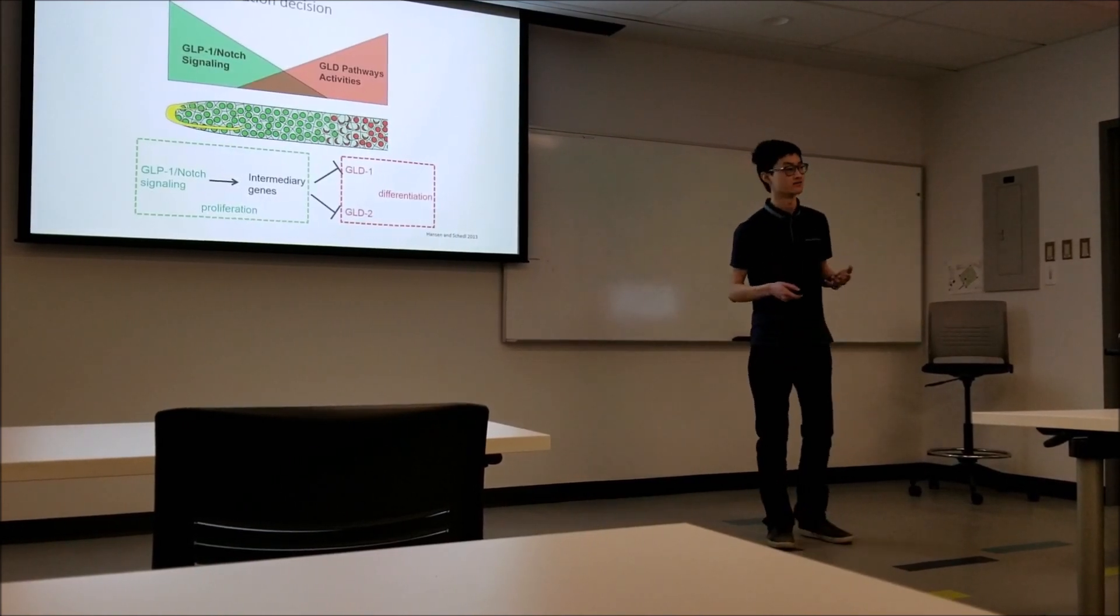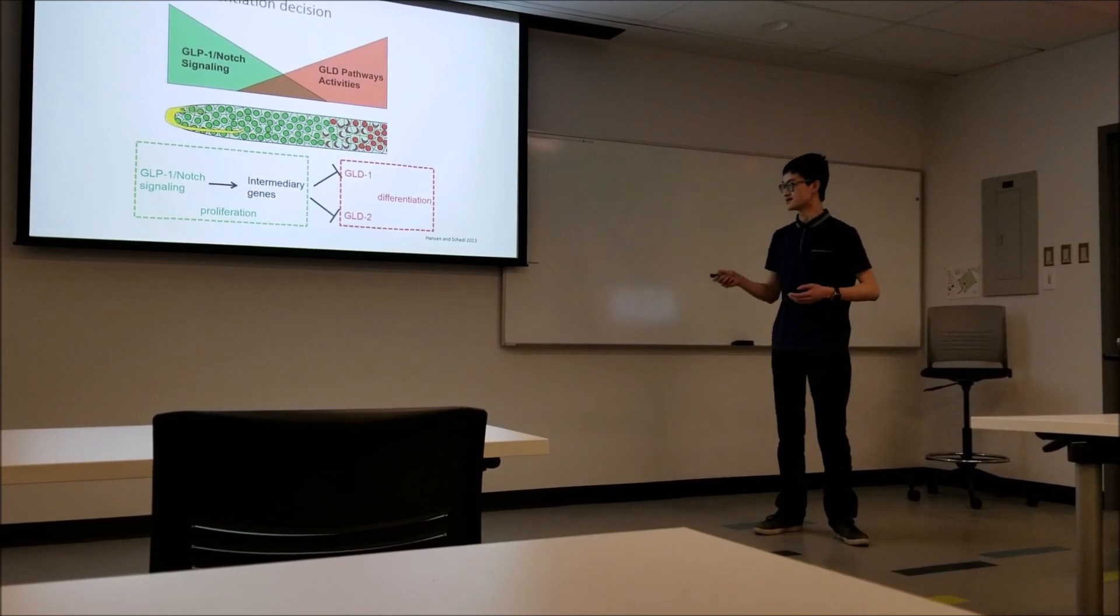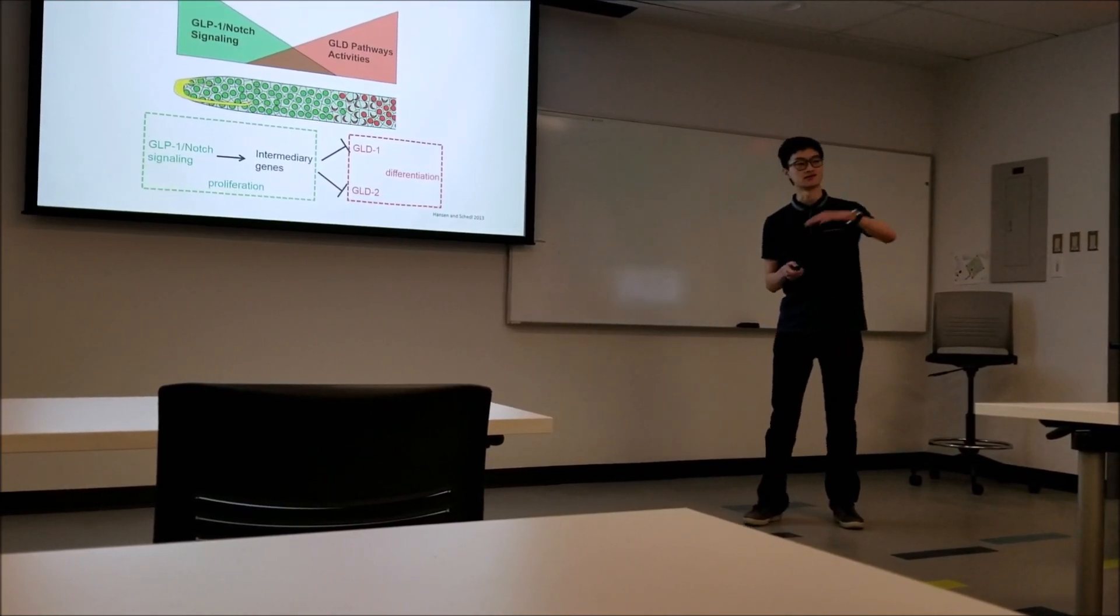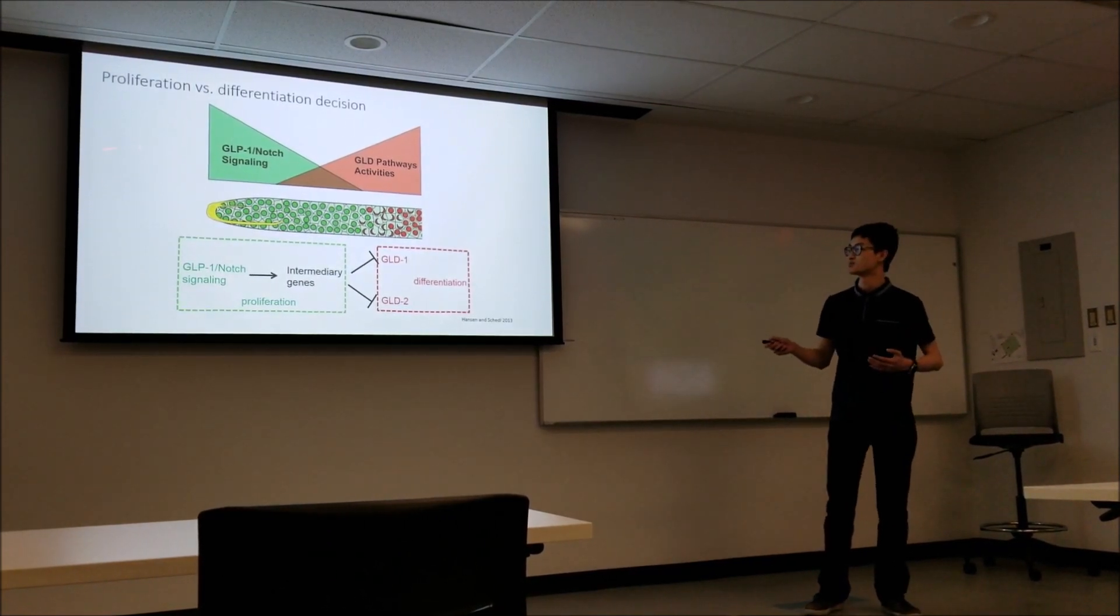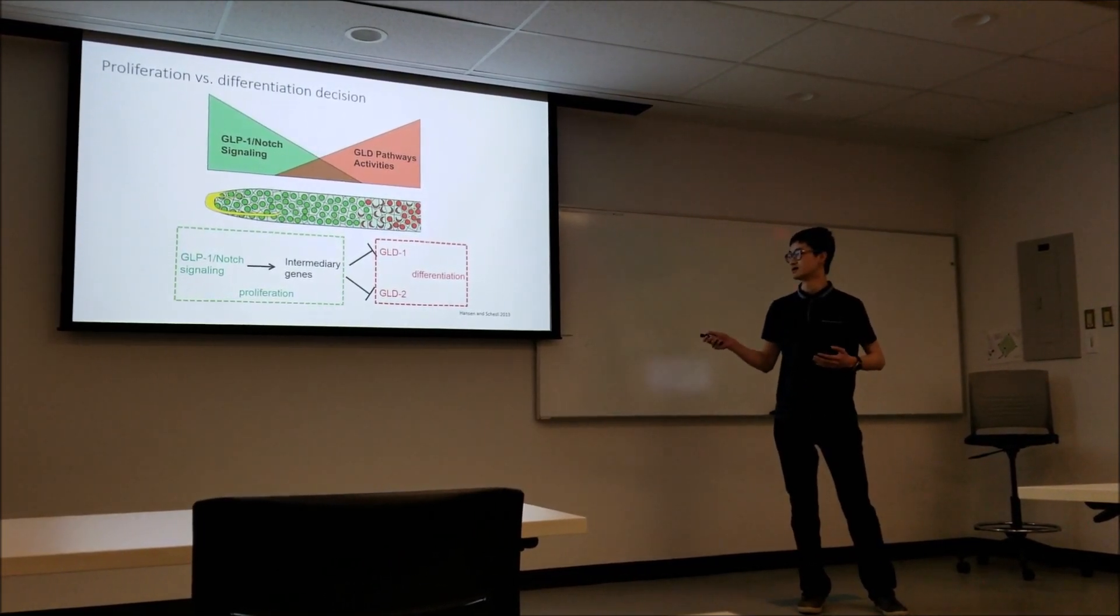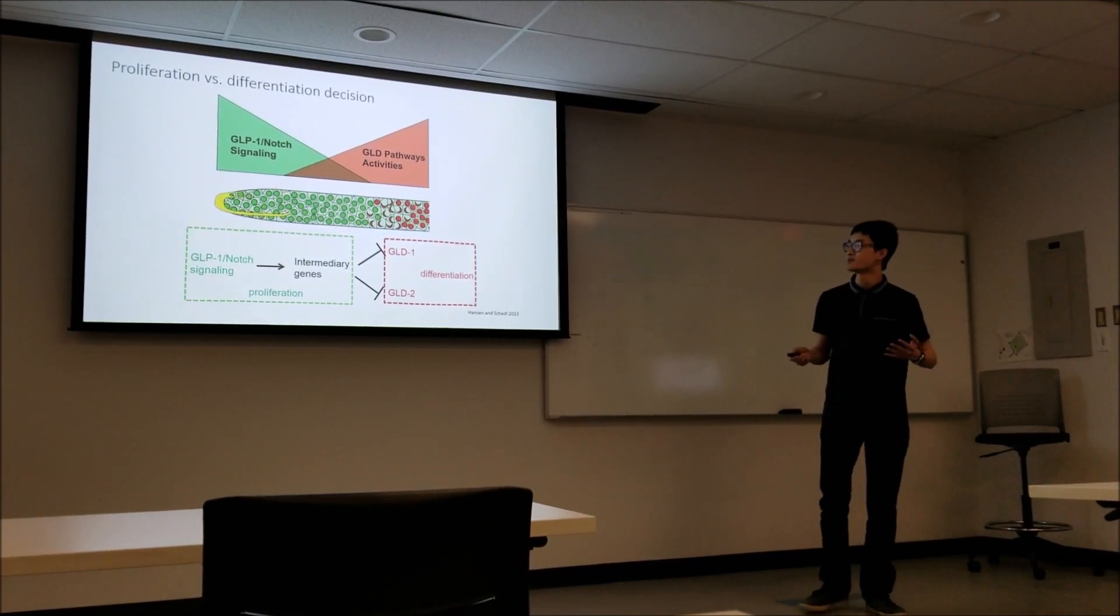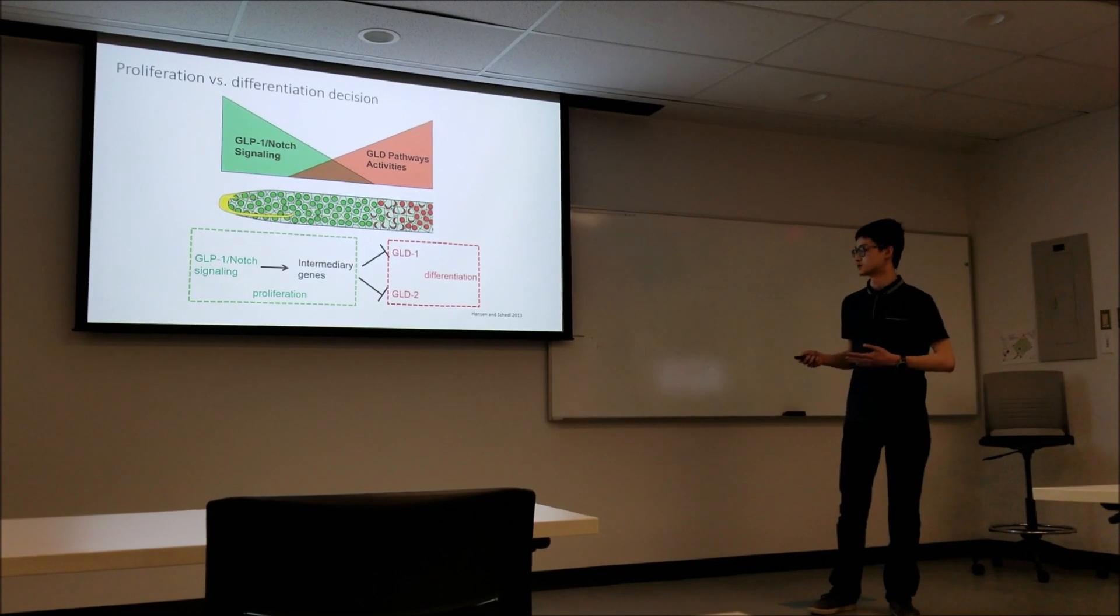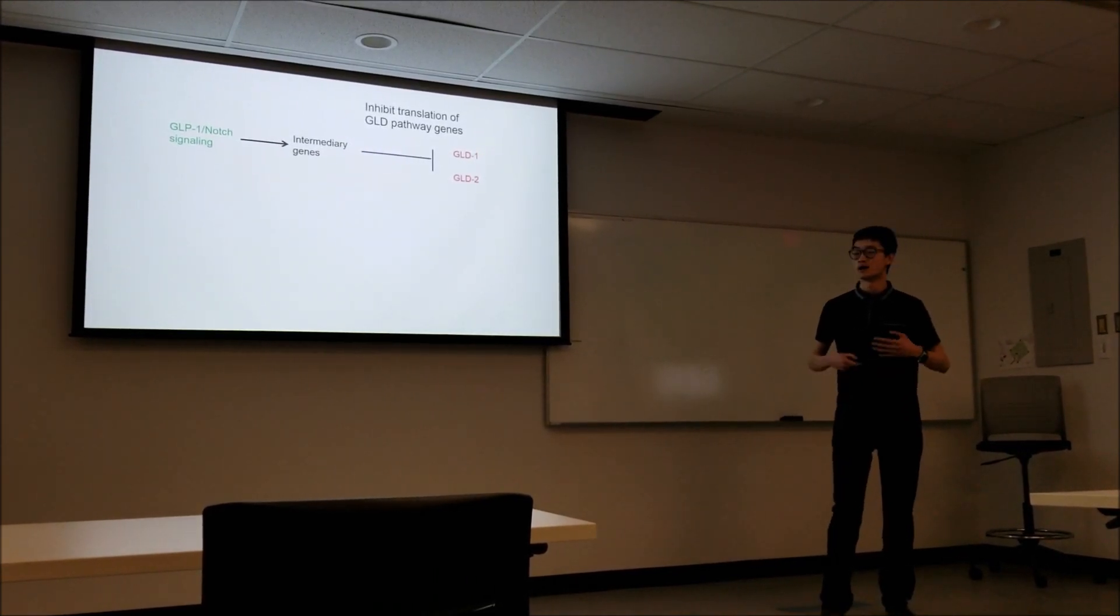That signal is actually NOX signaling straight out of CMB403. The NOX receptor in the C. elegans germline is called GLP1. That's giving a proliferation signal that exists in a gradient. As you move away from the distal tip cell, that signaling starts to go down, and in its place you get the GLD pathways taking over. GLP1 NOX signaling inhibits the GLD pathways through some intermediary gene pathways. The two main ones are GLD1 and GLD2, and they're encouraging differentiation.